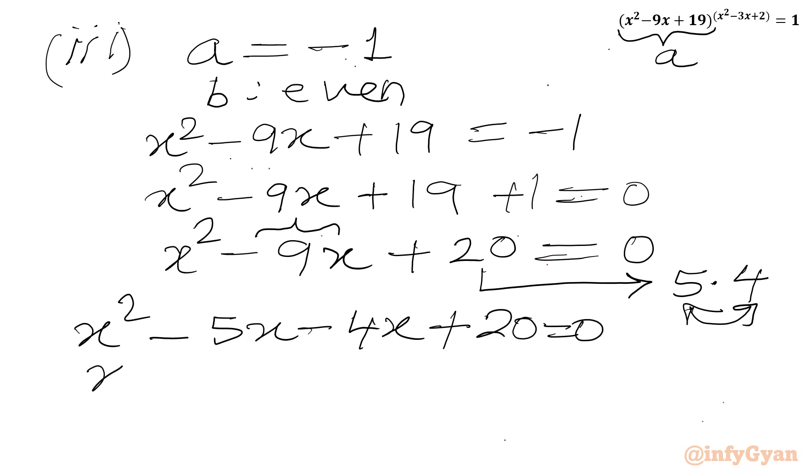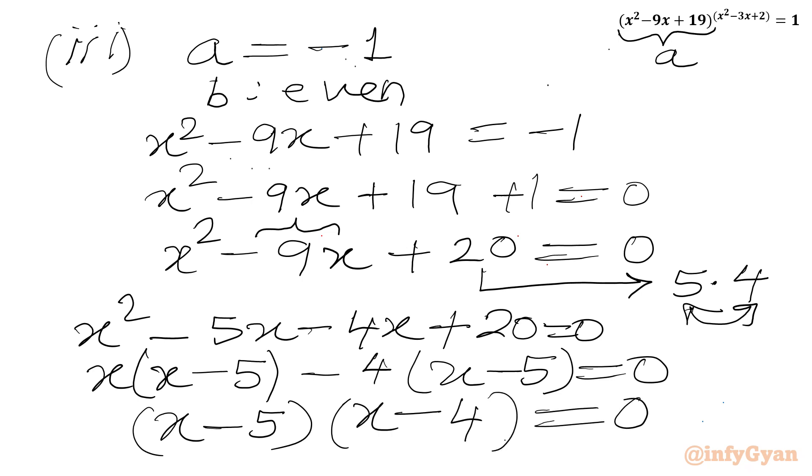From first two terms can take x common. From last two, negative 4 we will take common. So we are getting factors x minus 5 times x minus 4 equal to zero. Now from product zero rule we will write x will equal to 4 and 5.